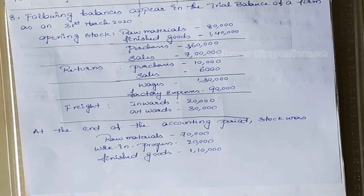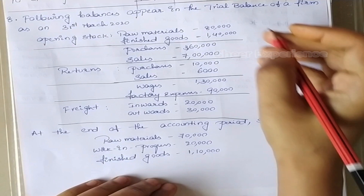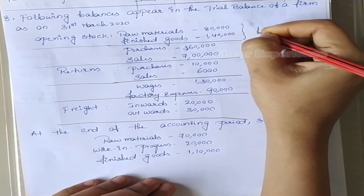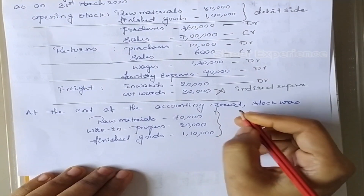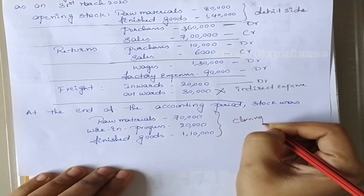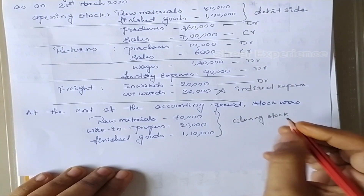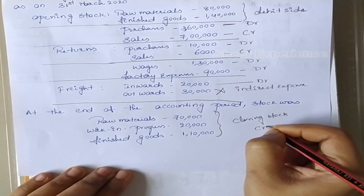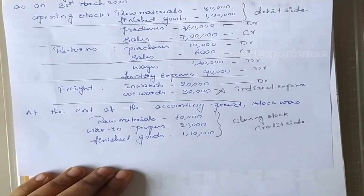At the end of the accounting period, stock was: raw materials 70,000, work in progress 20,000, finished goods 1,10,000. In this problem we don't have any new accounts, but opening stock and closing stock are given differently. Raw materials and finished goods together should be considered for opening stock. Here instead of a direct closing stock value, they have given end-of-period stock, so raw materials, work in progress, and finished goods together constitute the closing stock.